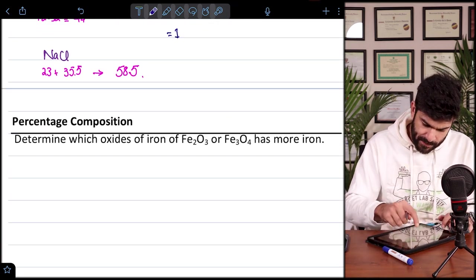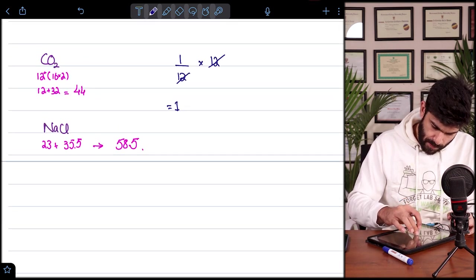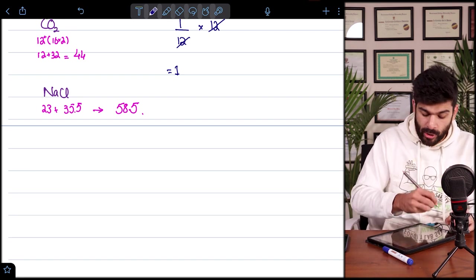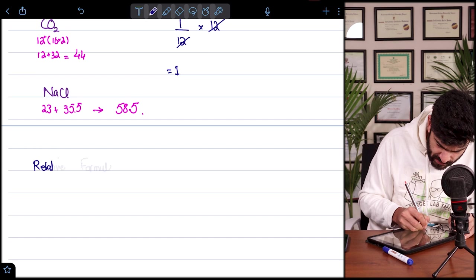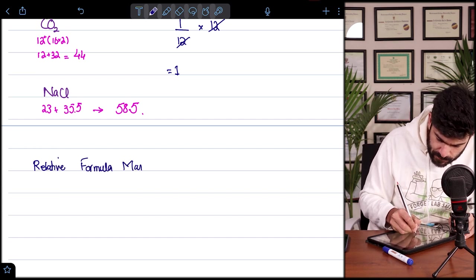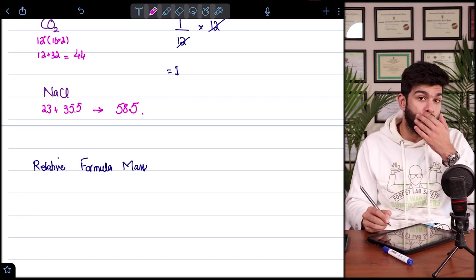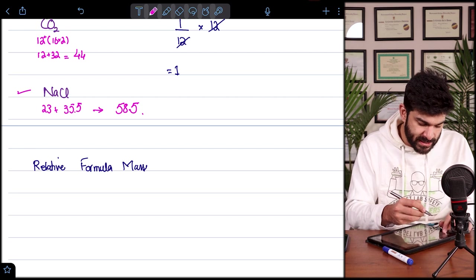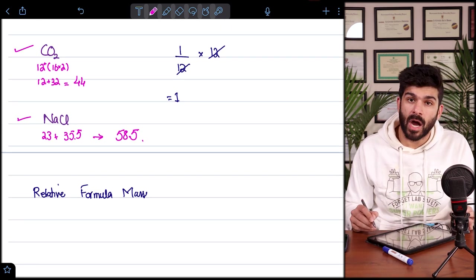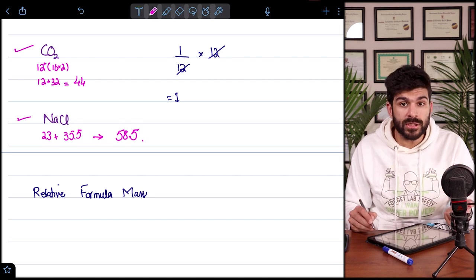For NaCl, we use a different term, which will be relative formula mass. So now this is only for the cases of ionic compounds. The concept is the same. We calculated the mass of NaCl in the similar manner, we calculated the mass of carbon dioxide.